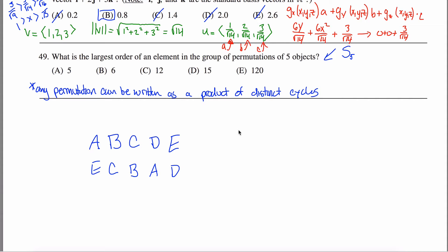To find the cycles, I pick any element — say A — and ask where it ends up. A ends up at E, so I write (A E). Then where does E end up? E ends up at D, giving (A E D). Then D ends up at A, so I close this cycle: (A E D) is a 3-cycle.